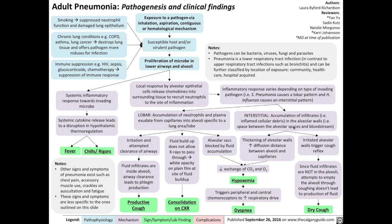With interstitial pneumonia, the irritated alveolar walls trigger the cough reflex, but since fluid infiltrates are not in the alveoli, attempts to empty the alveoli through coughing don't lead to fluid production. So with interstitial pneumonia, you tend to get a dry cough as opposed to a wet or productive cough. Other signs and symptoms of pneumonia exist, such as chest pain, accessory muscle use, crackles on auscultation, and fatigue, though these are less specific to pneumonia.